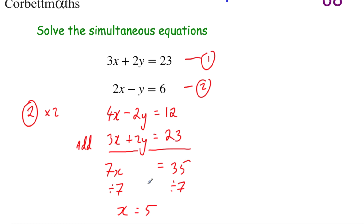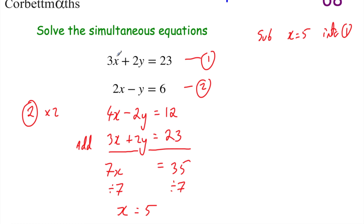So we now know that x equals 5. Now we can substitute that into either equation 1 or equation 2 to find y. I'm going to substitute x equals 5 into equation 1. So we've got 3x: 3 times 5 equals 15. So we've got 15 plus 2y equals 23. We now have an equation with just y's and numbers, so we can solve it to find y.